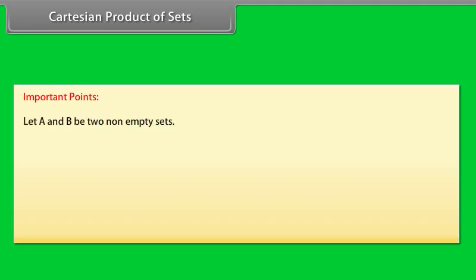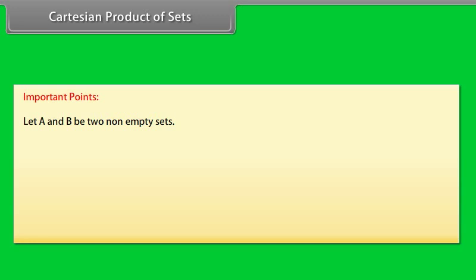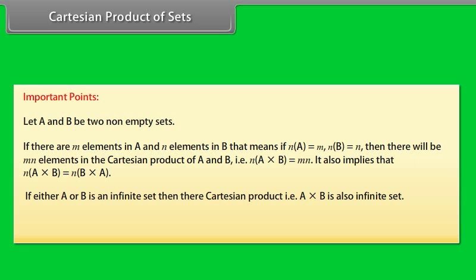Important points: Let A and B be two non-empty sets. If there are M elements in A and N elements in B — that is, n(A) = M and n(B) = N — then there will be M × N elements in the Cartesian product of A and B. That is, n(A × B) = n(A) × n(B) = n(B × A).